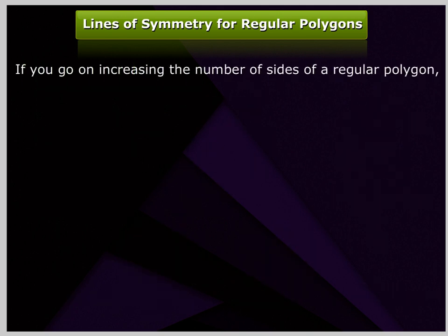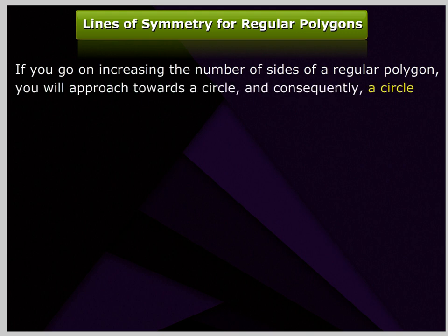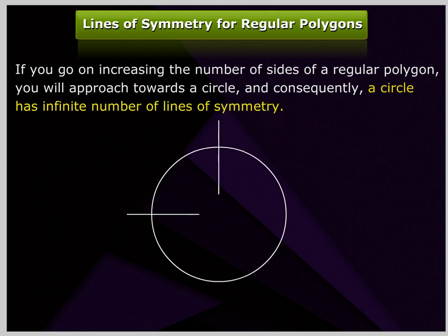If you go on increasing the number of sides of a regular polygon, you will approach towards a circle. And consequently, a circle has infinite number of lines of symmetry.